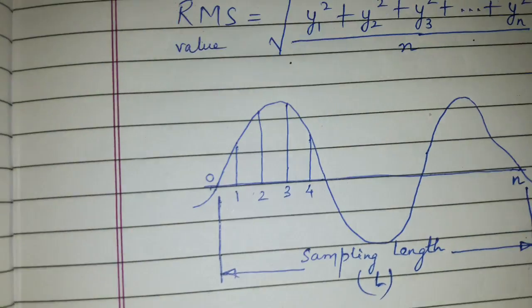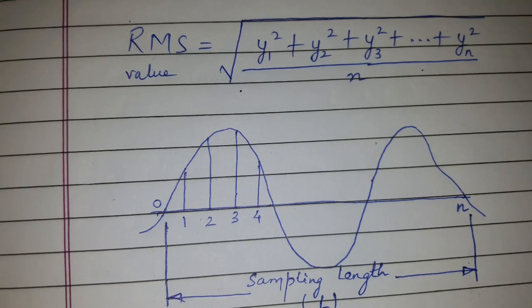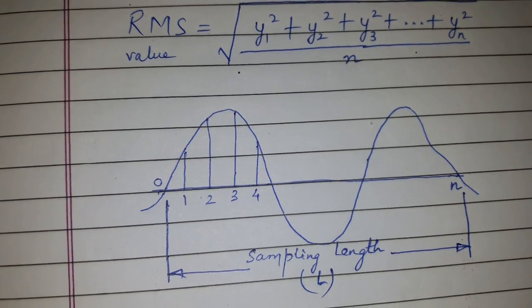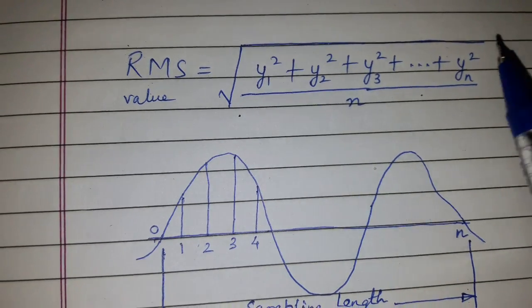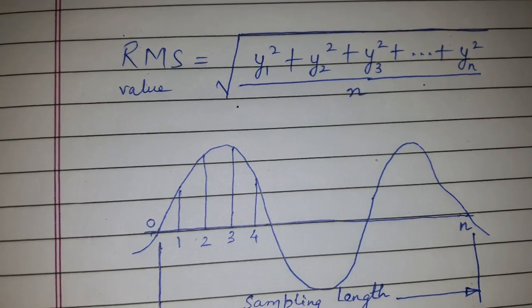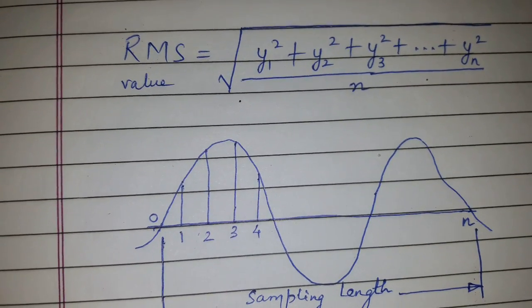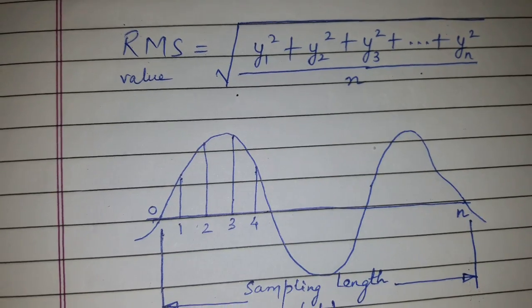Hi friends, today's topic of discussion is RMS value or root mean square value. Root mean square value is defined as the square root of arithmetic mean of square of ordinates, where the ordinates are measured from mean value.